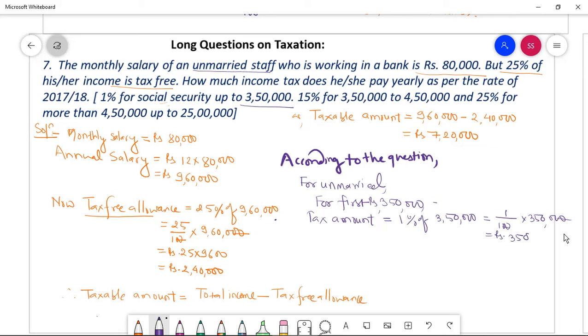And what is the taxable amount? Seven lakhs twenty thousand. Three fifty is already gone. For the next one lakh we have to go through that three fifty to four fifty. So for the next one lakh, it means three fifty to four fifty, tax amount is how much percent? Fifteen percent. Fifteen percent of one lakh. It is Rs fifteen thousand.